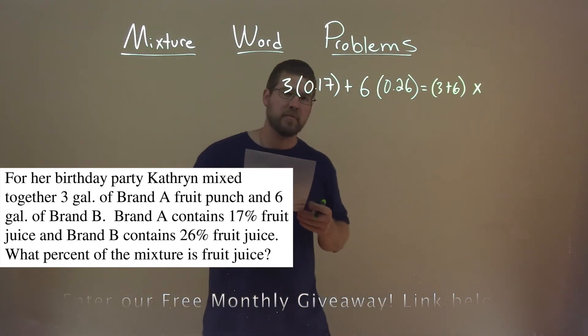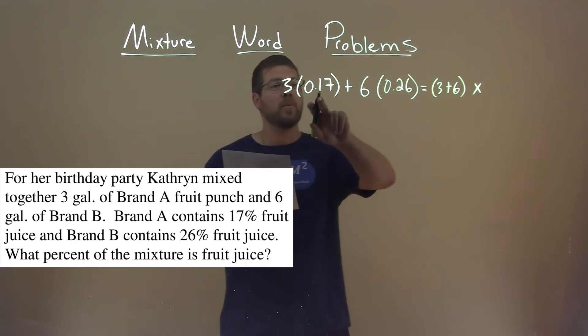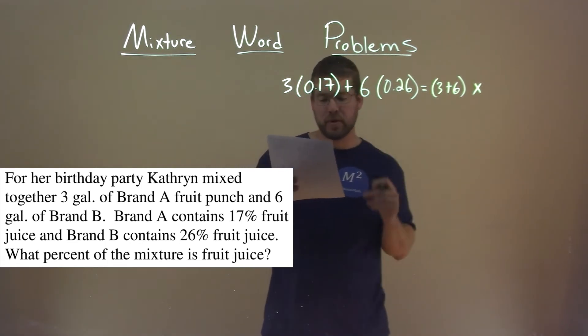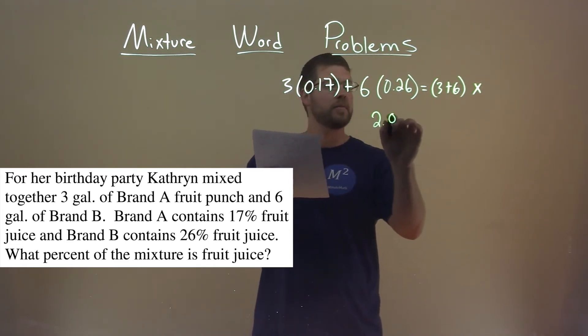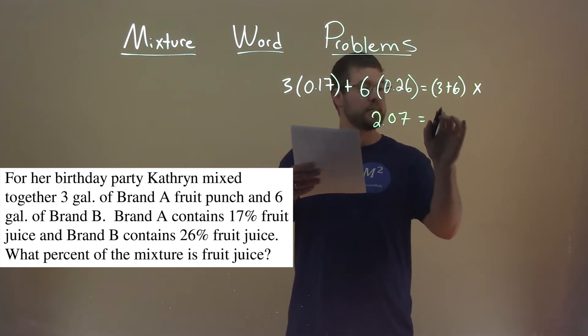Now let's simplify here. 3 times 0.17 plus 6 times 0.26 comes out to be 2.07, and 3 plus 6 is 9.